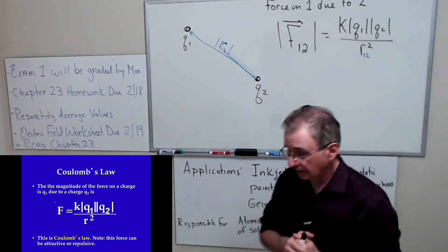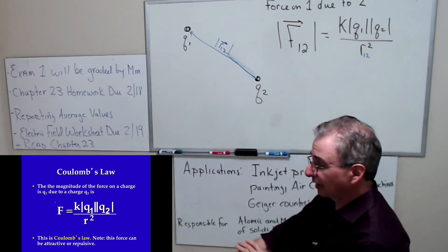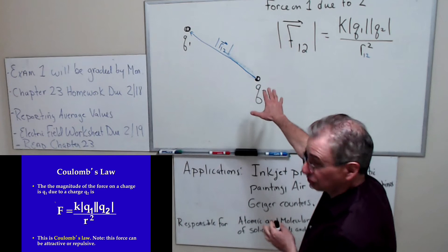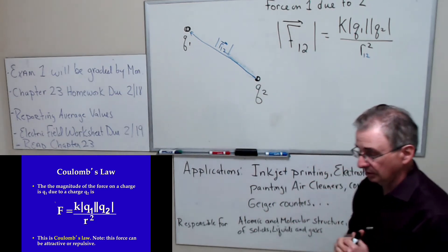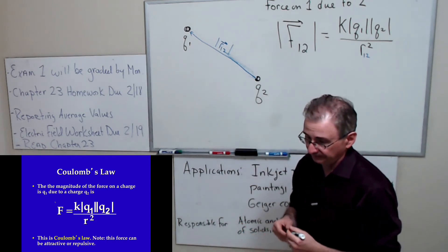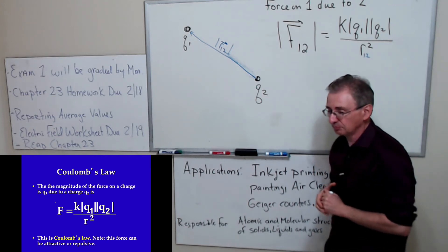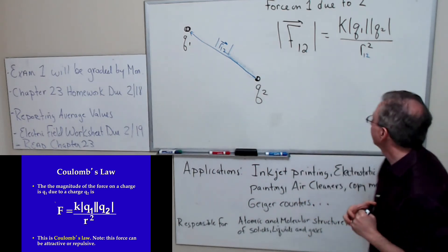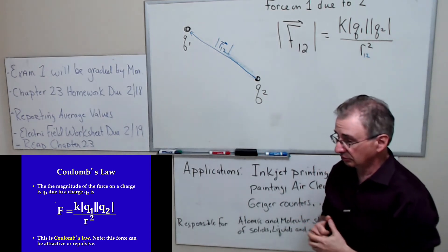Student question: is r the distance between the center of masses? Yes, it's implied that we're talking about the distance between the centers of mass of the objects. Right now I'm drawing point particles, because realistically Coulomb's law works best for point particles. However, objects with spherical symmetry can be treated as point particles — these can be the centers of spheres. What I've written down is the magnitude of the force, not the force vector. I want to show you a couple of ways to write down the actual force vector.